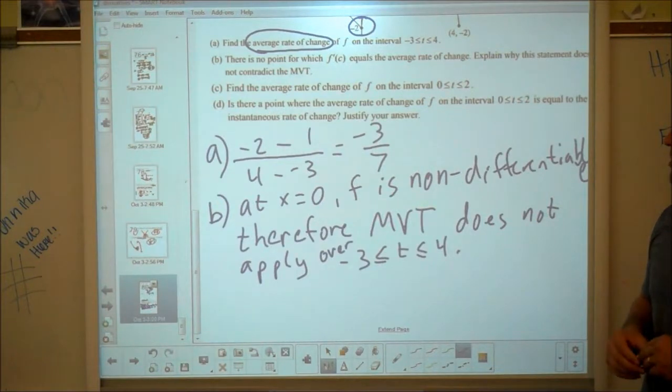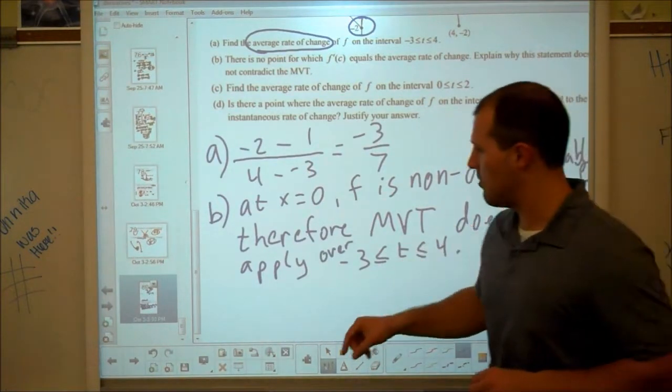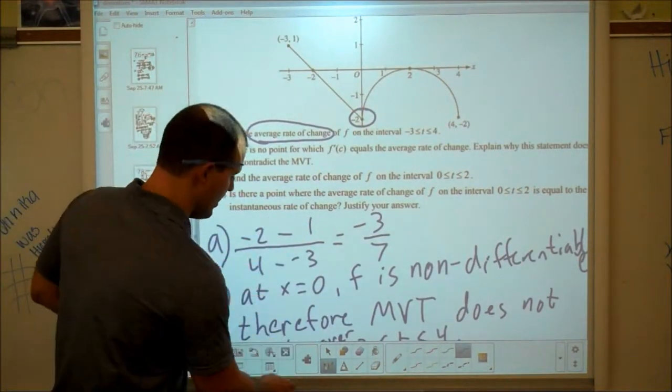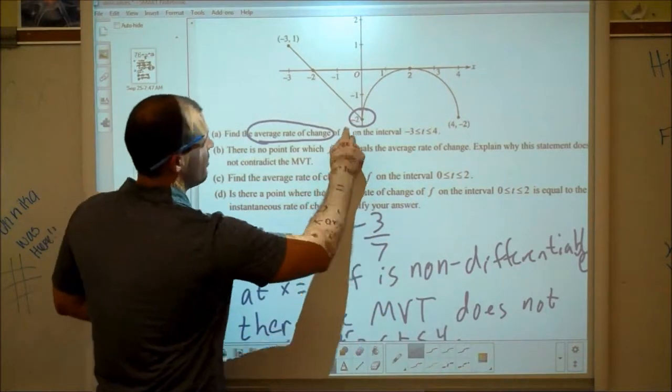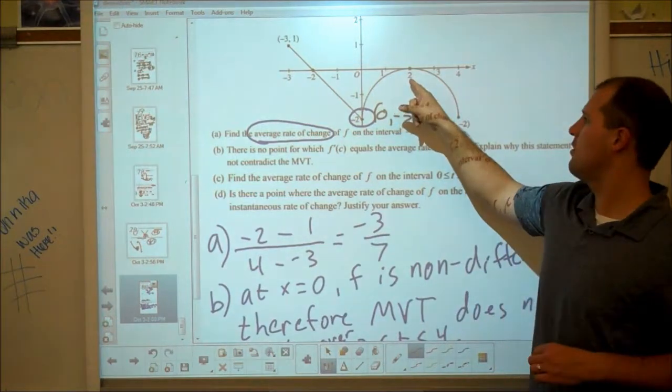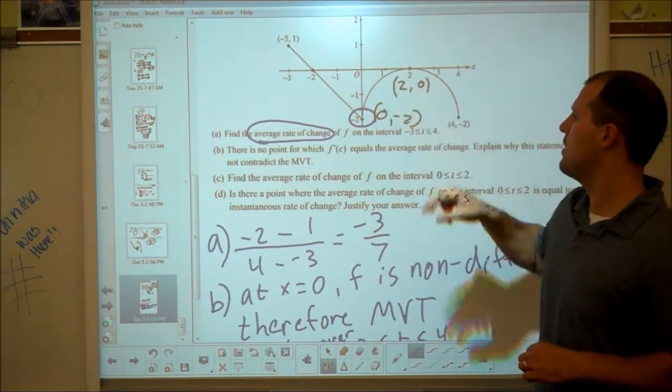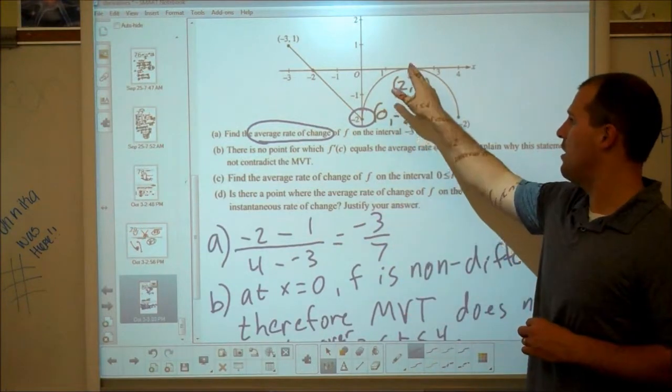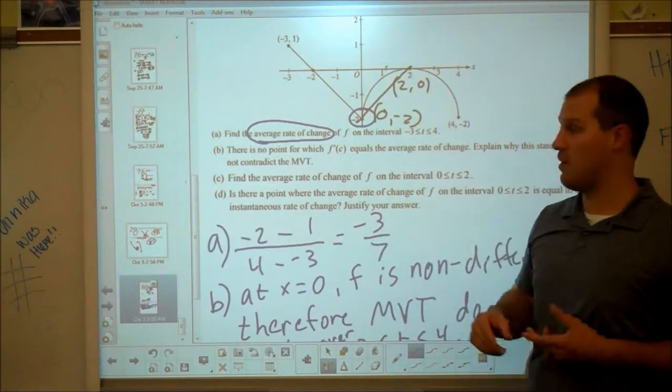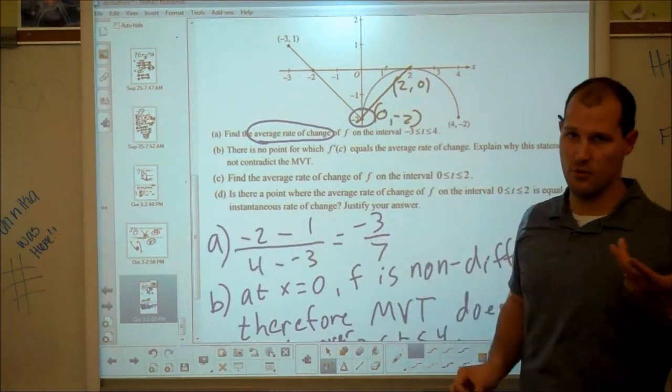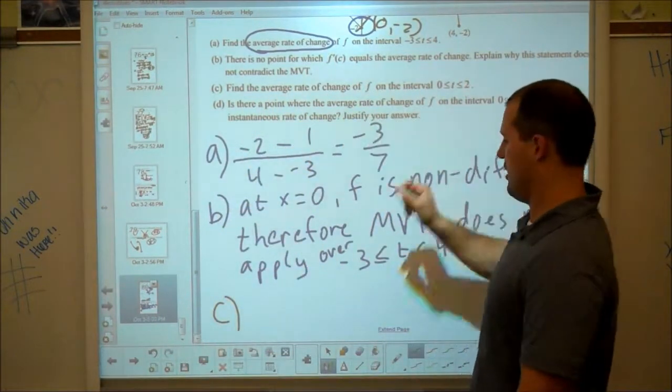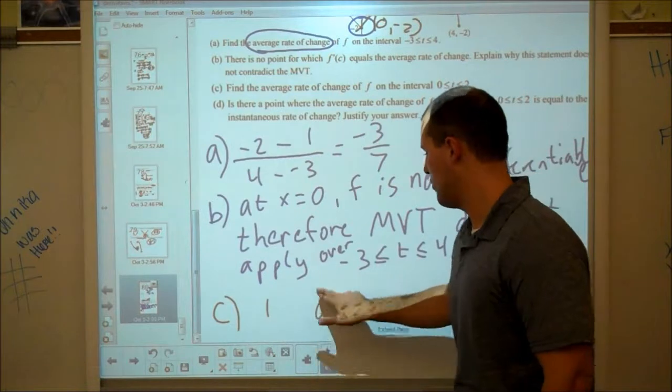Part c, find the average rate of change from 0 to 2. I'm going to need to go back up and look at the image again. So 0, I'm going to go ahead and try to pull some coordinates off it here. It looks like at 0, we have 0, negative 2. And up here, we have 2, 0. And so I hope you're able to look at that and know that that's 1. It goes from negative 2 to 2 over a distance of 2. Think rise over run, rise of 2, run of 2. Okay, so that's 1. Find the average rate of change? It's 1. And let's do part d.